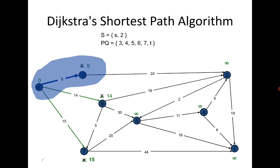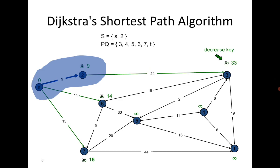Once we reach vertex 2, vertex 3 is reachable from 2. We update its distance from infinite to 24 plus 9, which is 33. The rest remain as they are. Now 14 is the minimum, and therefore from s to vertex 6 the shortest path is directly from s to 6.